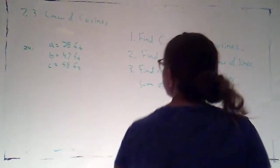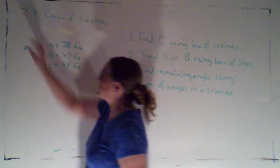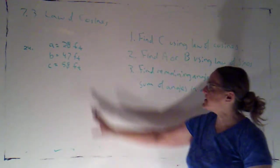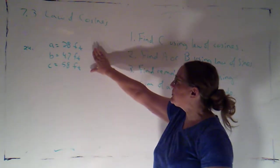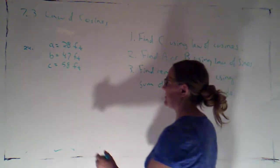Okay, here's another even-numbered problem from your book. This is number 24 from section 7.3. This is the other scenario we could have where we're asked to use law of cosines, and that's where we're given all three sides but none of the angles.